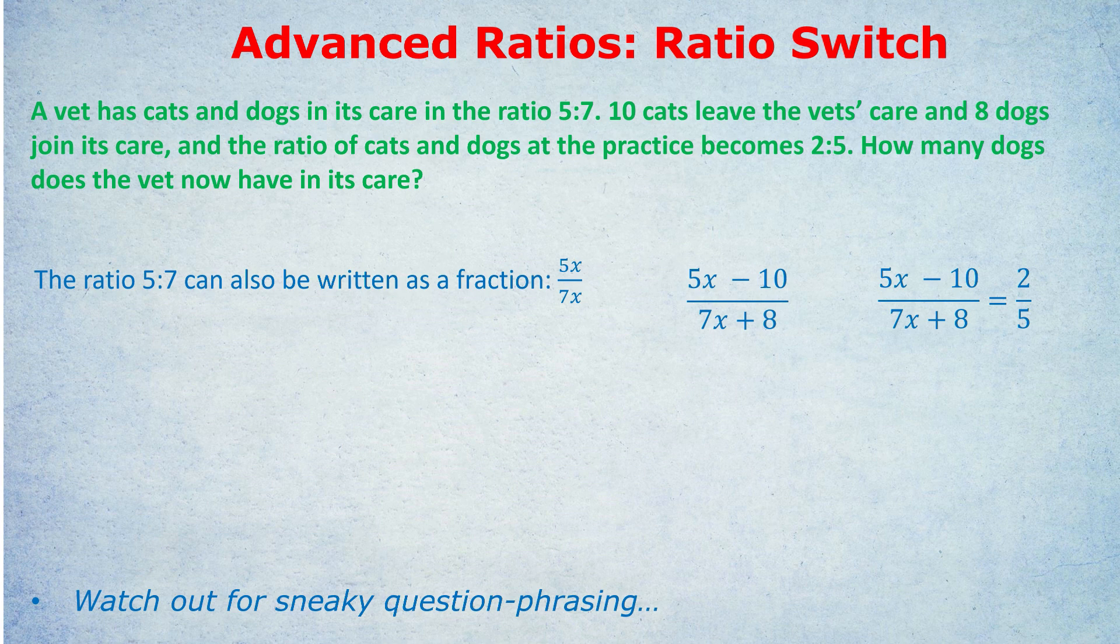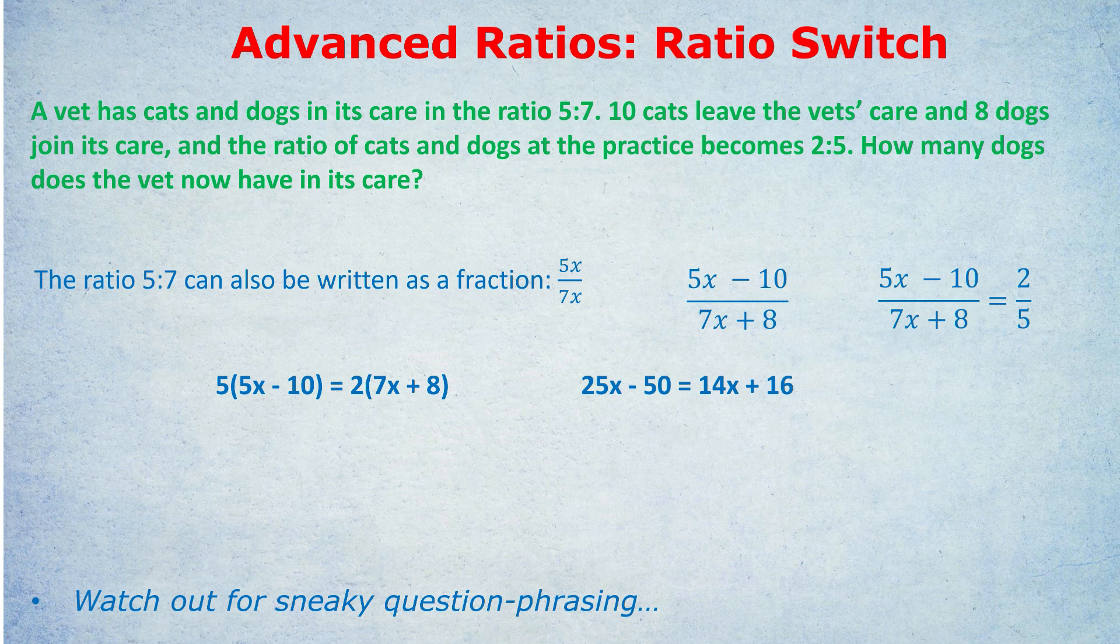That five in the bottom right of the equation, two over five, is going to come up and be multiplied by the five x minus ten. And the seven x plus eight in the bottom left is going to come up and be multiplied by the two on the right. Therefore, we now get a linear equation. Five times five x minus ten equals two times seven x plus eight. Notice no fractions anymore. Brilliant. This is much easier. Multiplying this out, as you can see, we get 25 x minus 50 equals 14 x plus 16. And just quickly to solve that, we would take away the smaller one, which is 14 x from both sides, and get rid of that minus 50 by adding 50 to both sides. This gives us 11 x equals 66. So x is six.